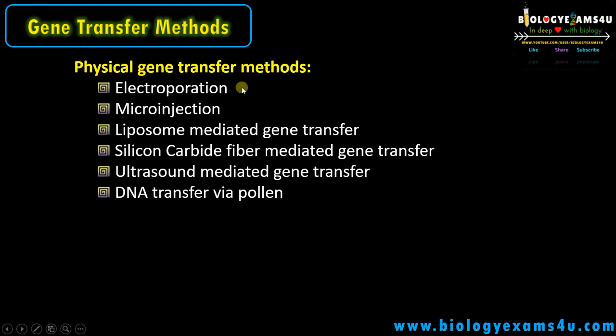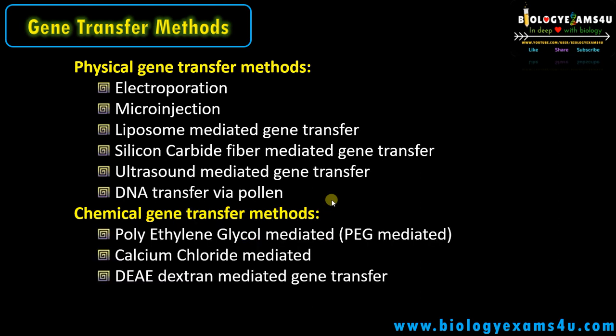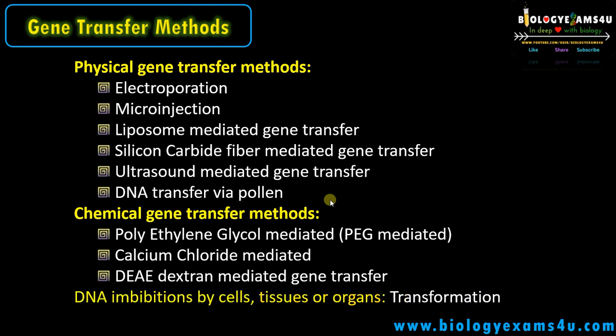Physical gene transfer methods include electroporation (applying electric current), microinjection using micromanipulators, liposome-mediated gene transfer — liposomes are lipid vesicles that can fuse with cells to introduce a gene — silicon carbon fiber-mediated, ultrasound-mediated, and DNA transfer via pollen. Chemical gene transfer methods include polyethylene glycol-mediated, calcium chloride-mediated, and dextran-mediated gene transfer. These chemicals cause changes in membrane permeability that allow entry of the foreign recombinant DNA into the cell. Other methods include vector-mediated methods like Agrobacterium tumefaciens, which has a very high success rate in gene transfer in plants, and viruses used as vectors like caulimovirus and gemini virus in plants.